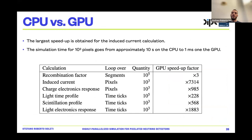Summarizing all the speedups obtained across the simulation steps: the recombination factor gives only a factor of 3, but the induced current calculation gives a factor of 7000, with similar gains in other steps. The simulation time for 1000 pixels goes from 10 seconds on the CPU to 1 millisecond on the GPU. With 14 million pixels, it is practically unfeasible on the CPU, but becomes feasible with the GPU implementation.